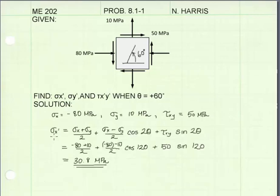Here I've written the equation for sigma x prime. What this equation does is it takes the x-face of our element, and when we rotate it through the angle positive 60 degrees, the face of the element will also be in a rotated condition, and we will call it sigma x prime. This equation gives us the value of stress on that face of the element, and we get a value of 30.8 megapascals. It's positive, so that means it will be a tension stress on the rotated face.